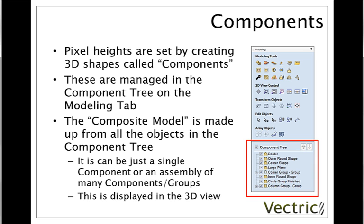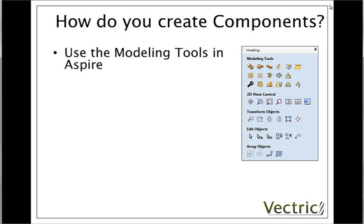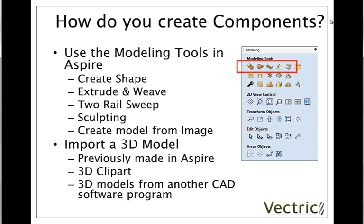Now that we have this idea of 3D objects or components in Aspire, we need to understand how they're created. Our first option is to use the modelling tools within Aspire itself — including create shape, extrude and weave, two rail sweep, sculpting, and create model from image. The other method is to import an existing 3D model, which may be something previously made in Aspire, 3D clip art downloaded from the web, or a 3D model created in another CAD software program, perhaps by your customer or yourself.